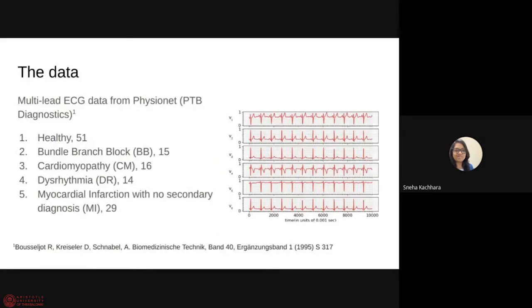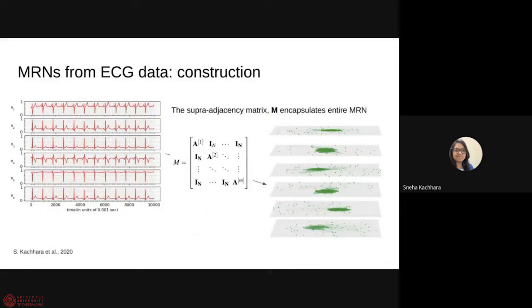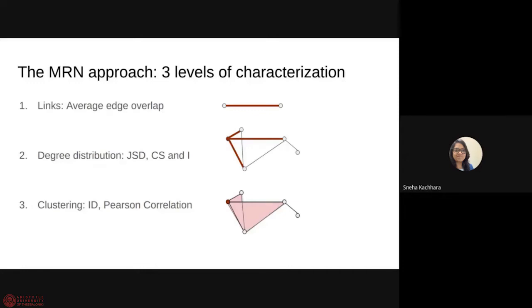So the data that we worked with is a multi-lead ECG data which is taken from the electrodes which are placed closest to the heart. So they are chest and then you have six different electrodes and you get six different time series which are all synchronized in time and this is taken from PhysioNet. We had 51 healthy subjects and some other subjects with different diagnosis such as bundle branch block, cardiomyopathy, etc. And what we did was we constructed MRNs, multiplex recurrence networks for all of them. To analyze this network, we found that a three-level characterization worked best. So the first level which is the most crude level is a link overlap or edge overlap. So what you do is you take all the links and then you see how many of them overlap across layers.